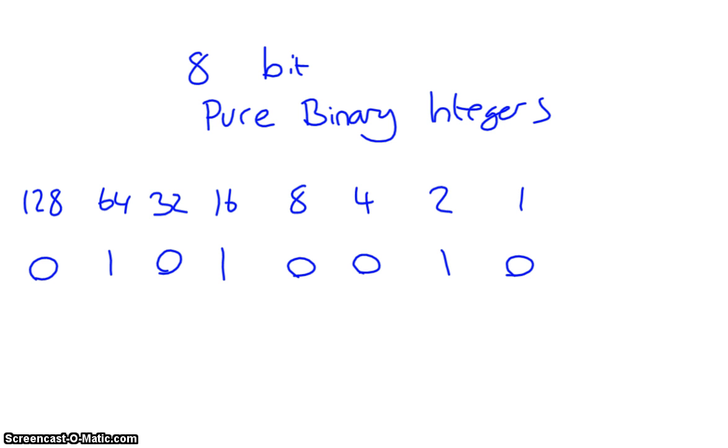There's a binary number 01010010. What we basically look at is these column headings. These column headings show us what that number is going to be. So this means we've got one 64, we've got one 16, and we've got one 2.